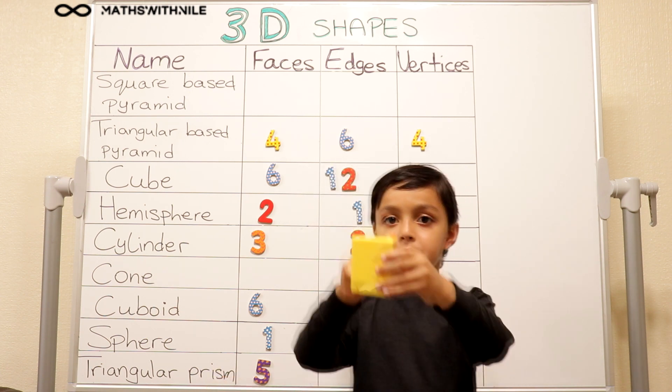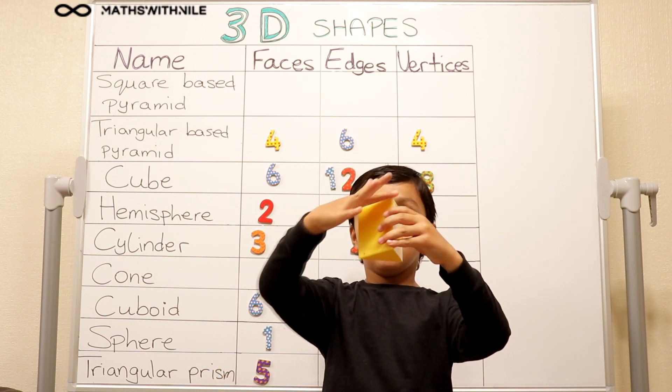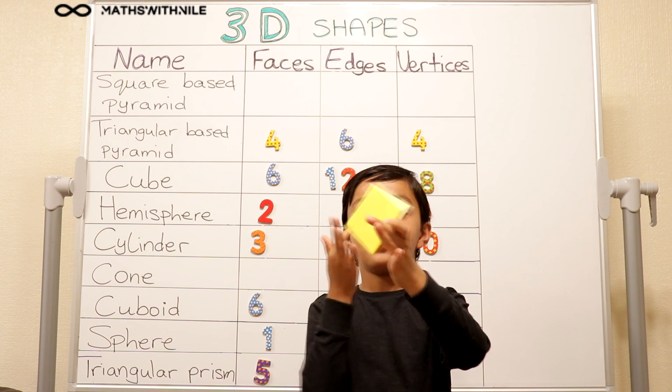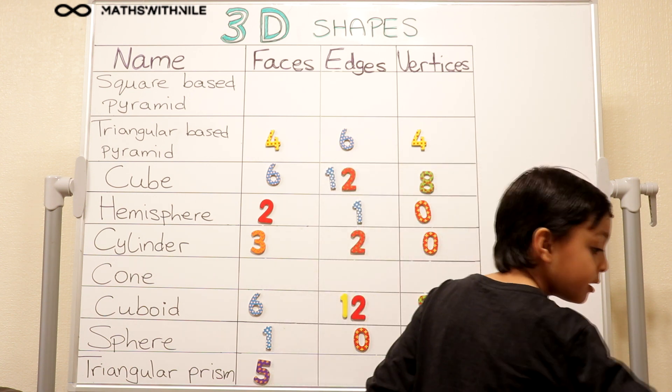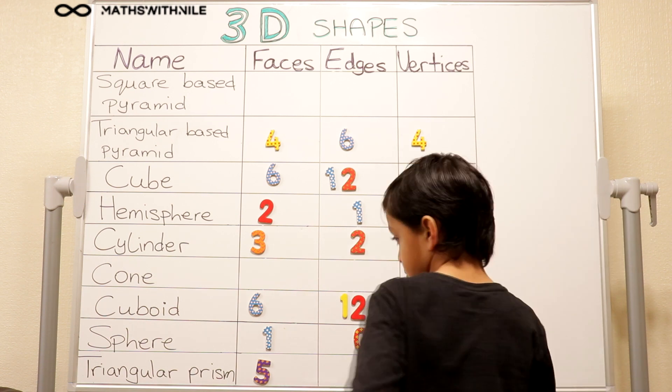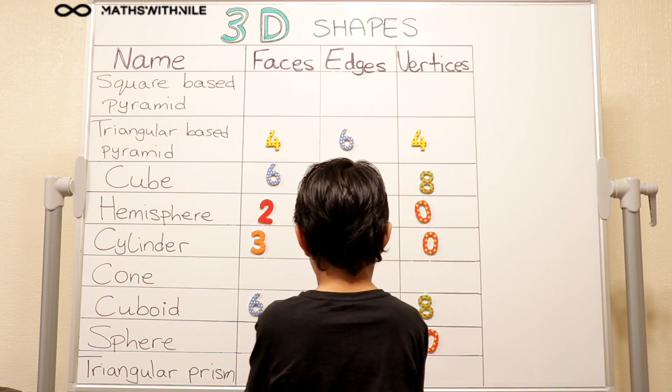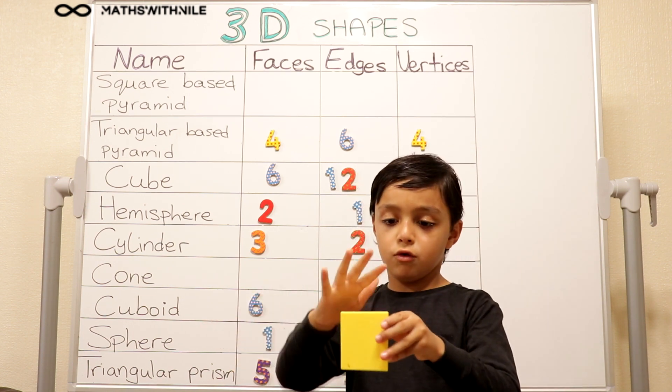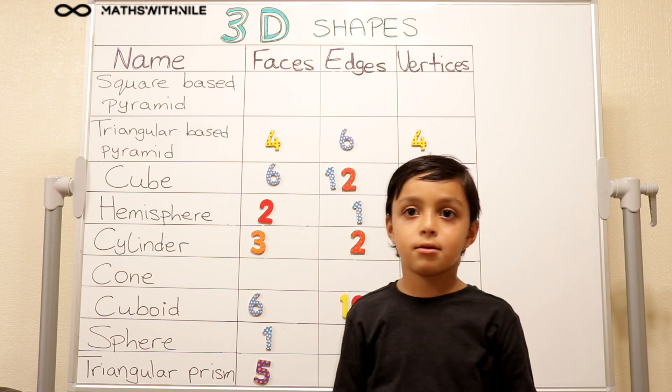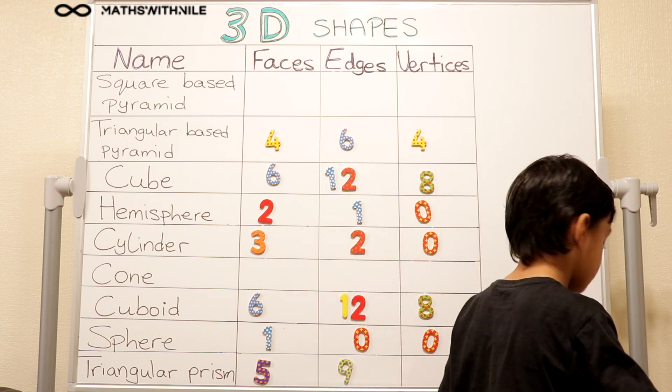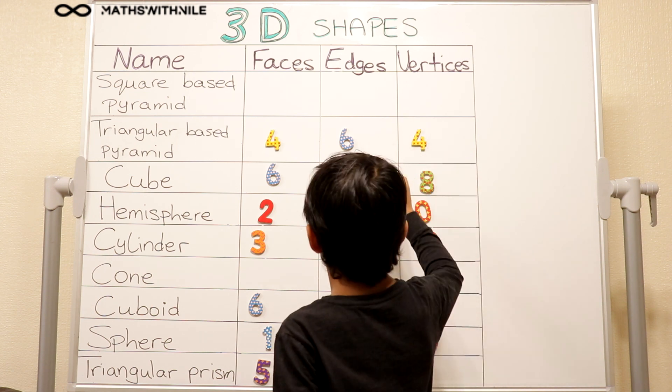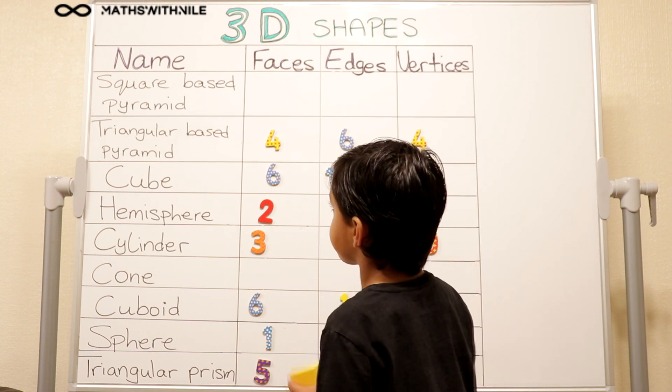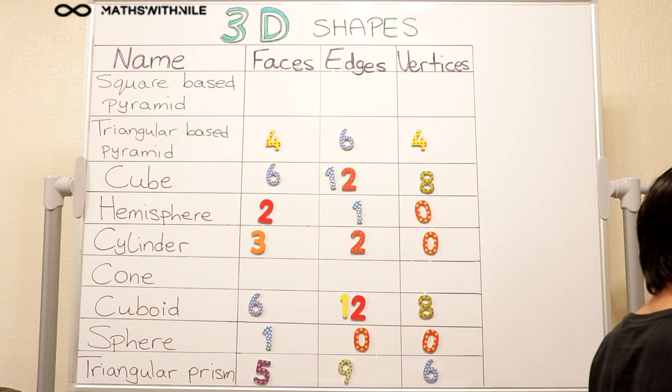How many edges? One, two, three, four, five, six, seven, eight, nine. Nine edges. And vertices. Let's have a look. One, two, three, four, five, six. Excellent. You've got two more shapes to do. So put that one down and grab one of the two shapes remaining.